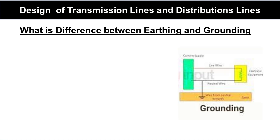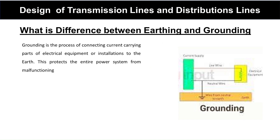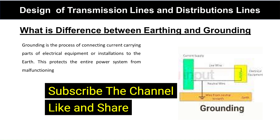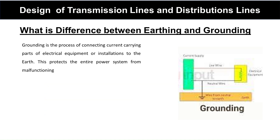Grounding is the process of connecting the current-carrying part of an electrical equipment or installation to the earth. This protects the entire power structure from malfunction. From the diagram, you can see the live part and the neutral part — here we are connecting the neutral part with the earthing electrode, which is called grounding. For example, grounding of a transformer neutral — we always ground that transformer neutral. This is called grounding.